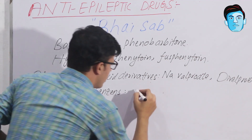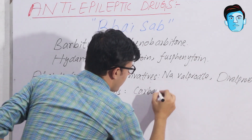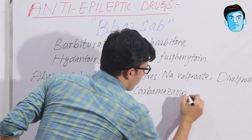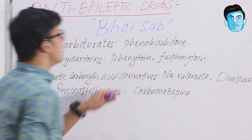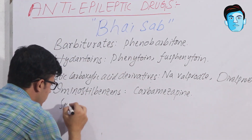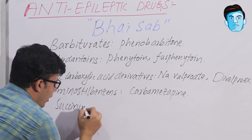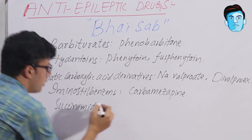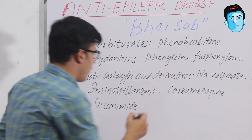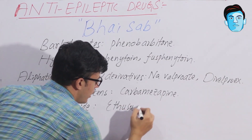I stands for iminostilbenes, and in this class we have carbamazepine. The next A stands for succinimides, and in this class we have ethosuximide.